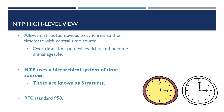NTP works by using a hierarchical system known as stratums. This defines how far away a device is from an authoritative time source. The lower the stratum number, the more authoritative the time source. The numbers can range from 1 to 15, with a stratum of 1 being the most authoritative — usually a device connected to an authoritative time source or an atomic clock.